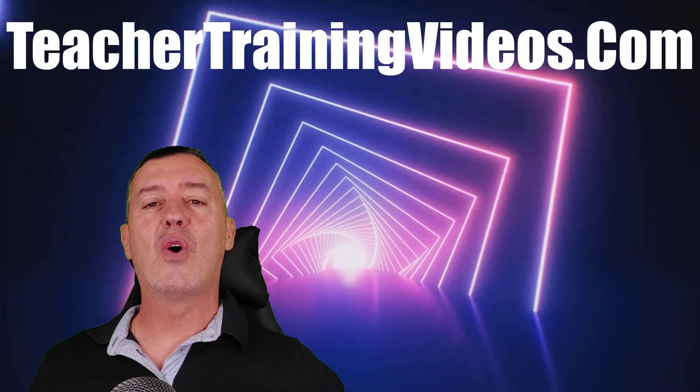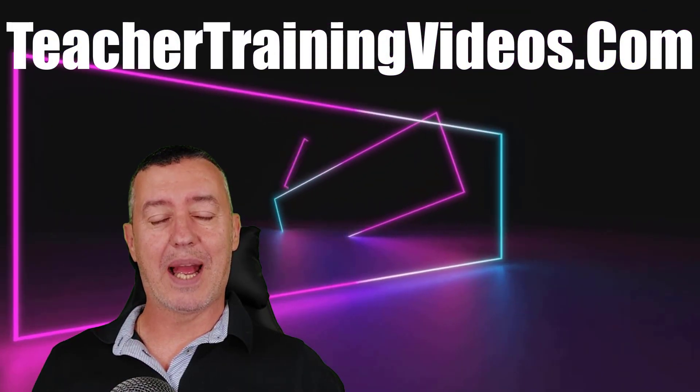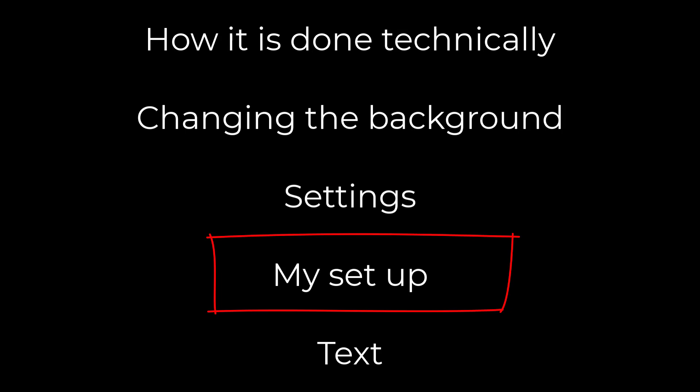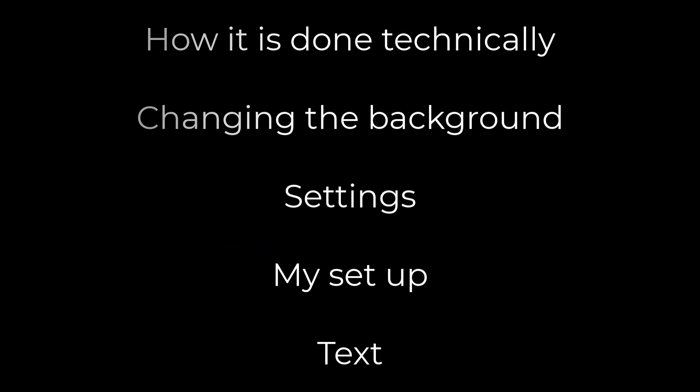Let's get started on how I do this green screen effect using Camtasia. Very quickly, what am I going to cover? I'm going to show you how it's done technically — how I actually remove the background and how I change the background by adding different backgrounds, as you saw at the beginning. I'll cover a couple of settings you need to know about, show you how my setup actually looks, and finally show you how to add the text. There is a menu system so you can jump to any part of the video.